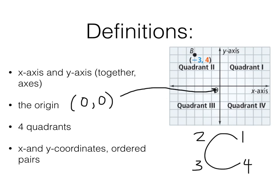The x-coordinates and y-coordinates make up ordered pairs. The ordered pair for point B up there is negative 3, 4. When graphing an ordered pair, you start at the origin, then move in the x direction first. Negative 3 means left 3 — positive is right, negative is left. Then positive 4 means up 4 — for the y-axis, negative is down and positive is up. So negative 3, 4 gives us point B.